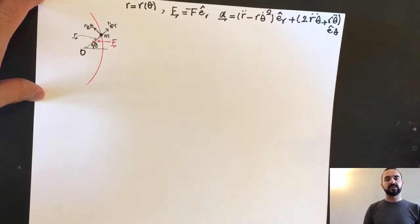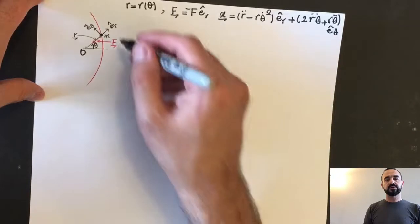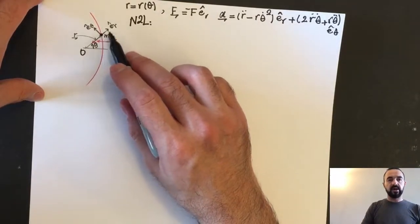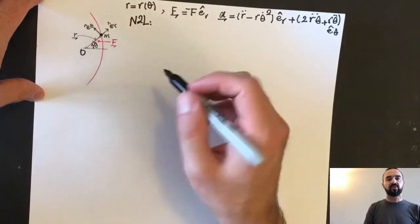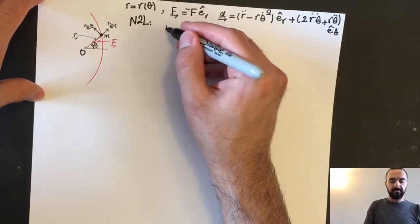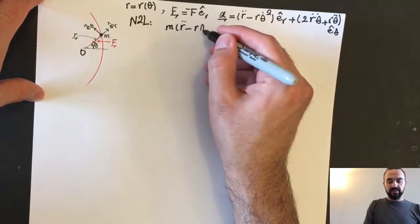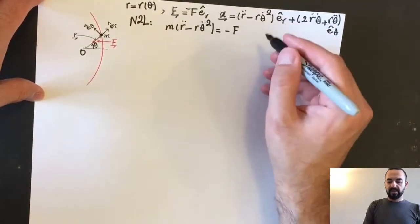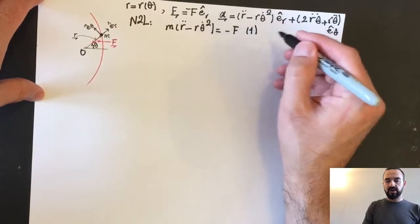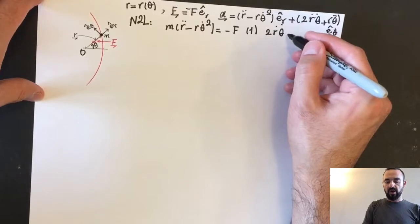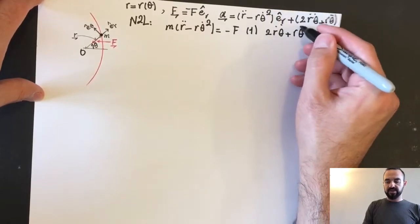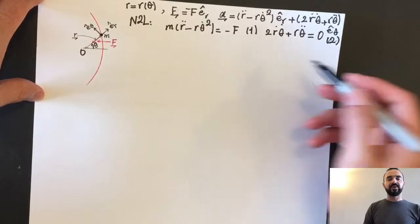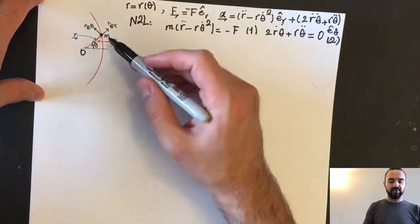To derive the equations of motion, we apply Newton's second law in the radial and transverse directions. In the radial direction: M times (R-double-dot minus R theta-dot squared) equals minus F — call this equation 1. In the transverse direction: 2 R-dot theta-dot plus R theta-double-dot equals 0 — call this equation 2. The second equation equals zero because there is no force in the transverse direction.